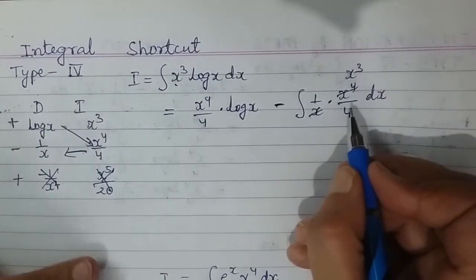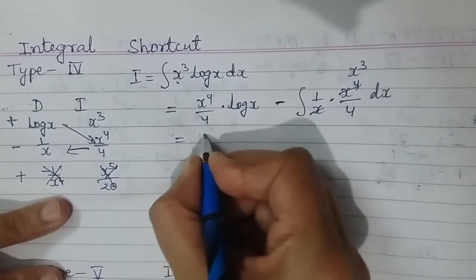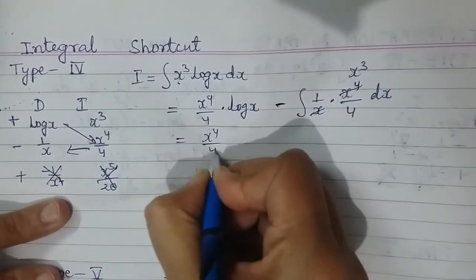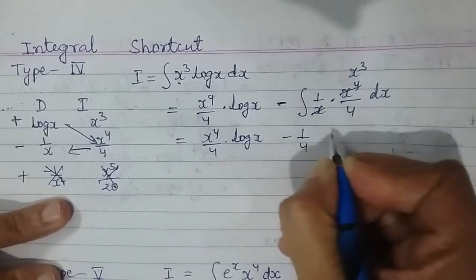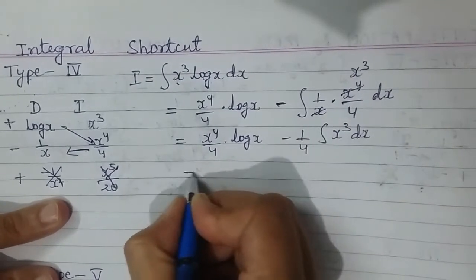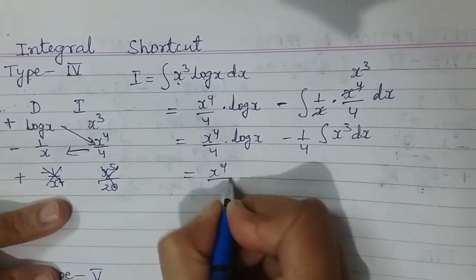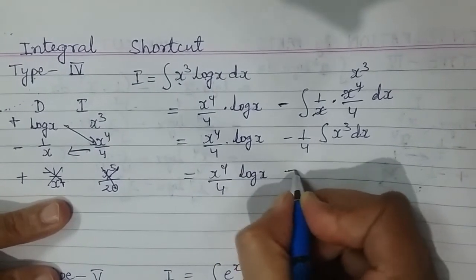So x cube upon 4—this is a single function and it can be easily integrated. So let us do that: x power 4 upon 4 log x, and here I am having, I will take 4 outside, I am having integral of x cube dx.